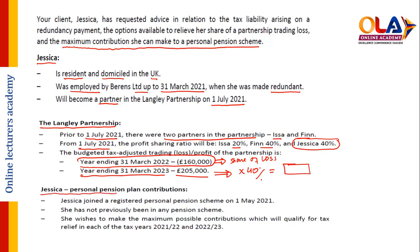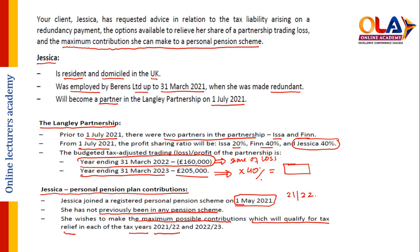Now the main element is pension contribution. Jessica joined a registered personal pension scheme on 1st May 2021, which indicates that the tax year we have to consider is 2021/22. She has not previously been in any pension scheme. She wishes to make the maximum possible contribution which will qualify for tax relief in each of tax years 2021/22 and 2022/23. There is an important element: she was not previously registered before 2021/22.